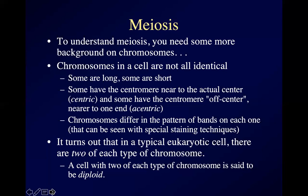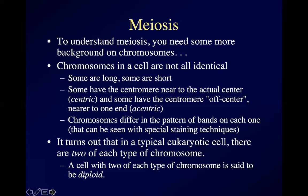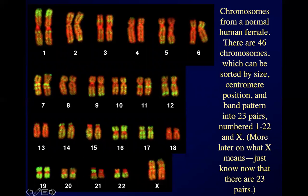Here are the chromosomes from a normal human female, stained with a fluorescent stain where different parts of each chromosome fluoresce as either orange or yellow. You can spot where the centromeres are — in chromosome one, at the upper left, the centromere is that slightly red area right in the center. You can see a dark division between the chromatids, but right in the middle there's none of that dividing line — that's the centromere.